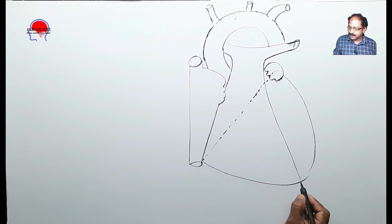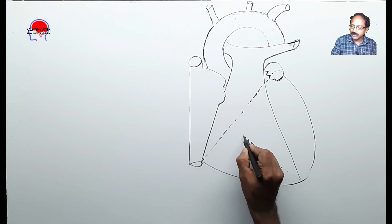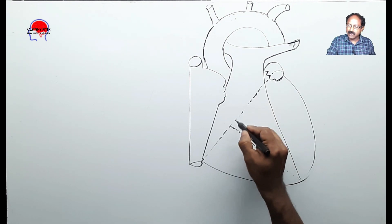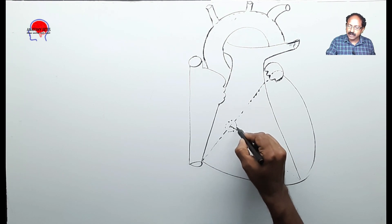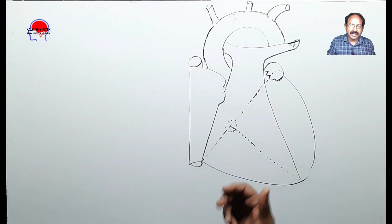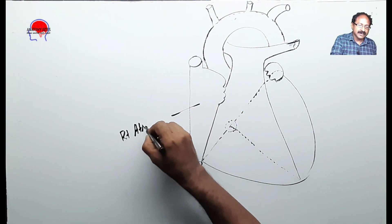Close to the apex, it turns to the inferior surface, where you can draw a dotted line of the posterior interventricular groove, which meets the posterior coronary sulcus like a figure of T. This point is named the crux. Remember that this is behind the heart. With this basic diagram you can develop many other diagrams.